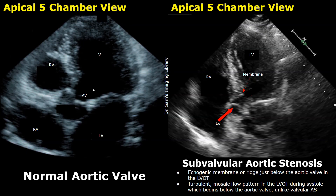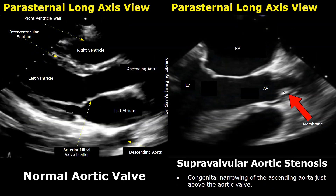In supravalvular aortic stenosis, a similar ridge or narrowing is present above the aortic valve. This narrowing is also congenital and rare, and will be seen as an echogenic structure in front of the aortic valve on echocardiography.